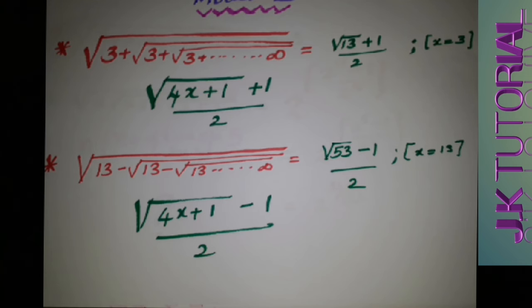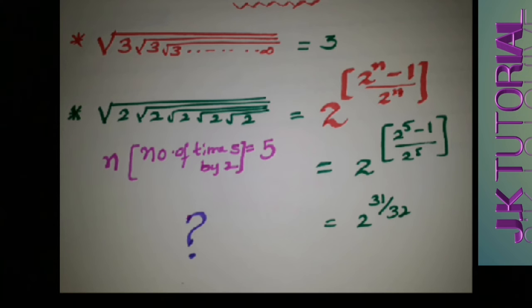If it is a minus case, the formula becomes: square root of 4x plus 1, minus 1, divided by 2. For example, with x equal to 13, we get 4 times 13 equals 52, plus 1 equals 53, so the answer is the square root of 53, minus 1, divided by 2. We use this formula when the number cannot be expressed as a product of two consecutive numbers.